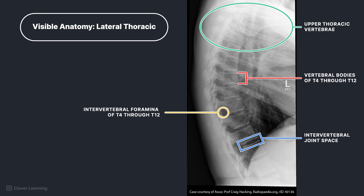We will take a look at that projection next. From superior to inferior on this image, we can see the intervertebral foramina, thoracic vertebral bodies, and open intervertebral joint spaces. Notice how the upper thoracic vertebrae are obscured, as previously mentioned.